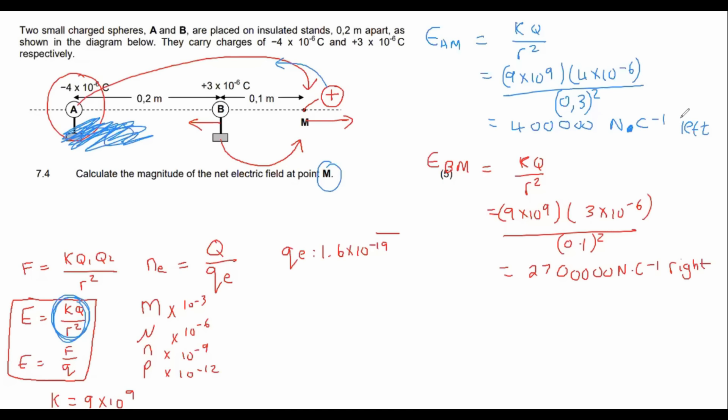So now what happens is that you've got A trying to make M go left and you've got B trying to make M go to the right. So if we had to do a free body diagram on M, we would see that there is electric field of B on M pushing it to the right. And then there's a smaller force or electric field of A. And so if we want to work out the net, I'm going to choose to the right as positive. So then I'm just going to say the electric field of B minus the electric field of A. And so that's just going to give us two point seven million seven hundred thousand. Yes, two point seven million minus four hundred thousand.